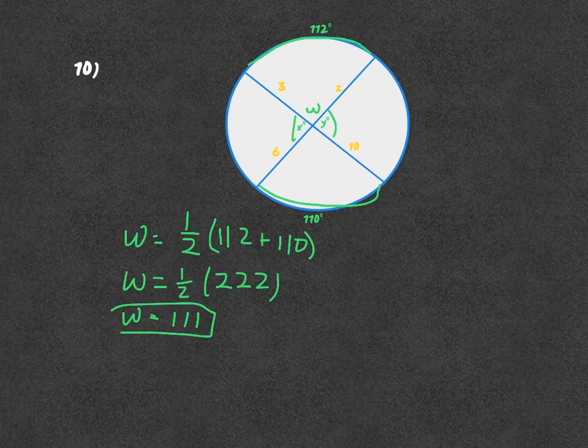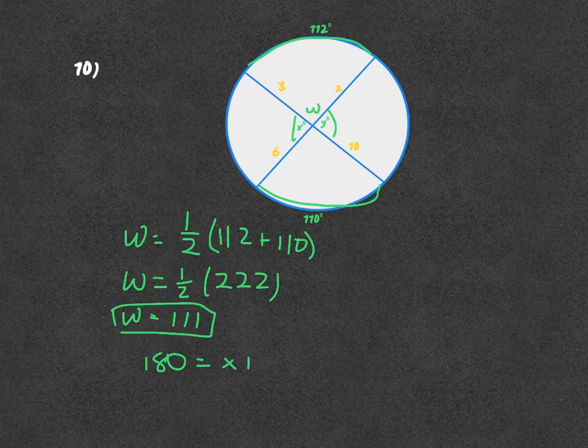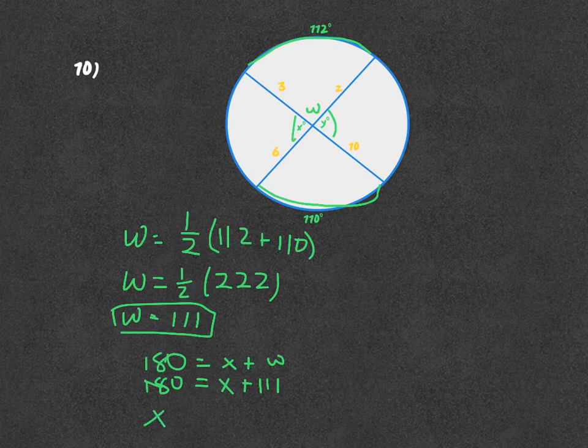If W equals 111, both X and Y are going to be supplementary to W. So 180 equals X plus W. You're going to subtract the 111 from the 180, and X equals 69.